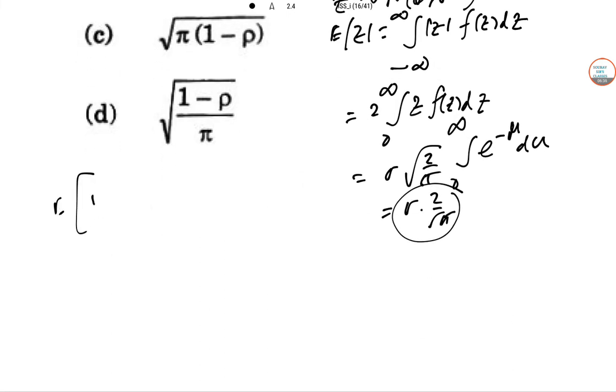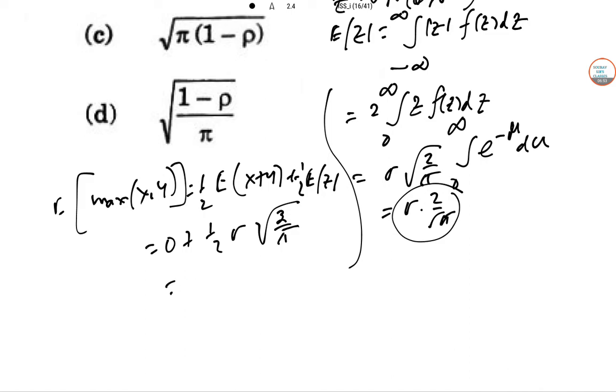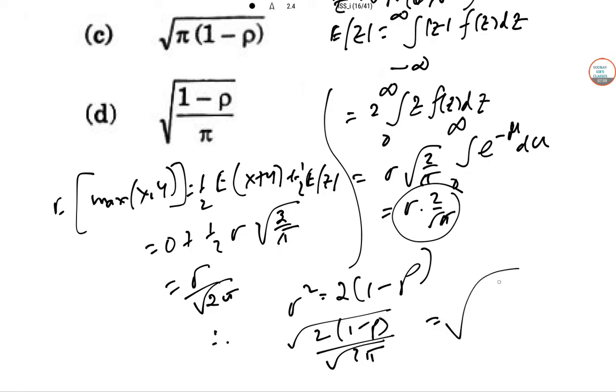Now, expectation of maximum of X, Y. This thing is half of expectation of X plus Y plus half of expectation of mod Z. So this is 0 plus half sigma root over 2 pi. So sigma root over 2 pi. Sigma square equal to 2 into 1 minus rho. So this expectation of max, this value will be 2, this and this divided by 2 pi. So this is 1 minus rho by pi. Hence, option number D is correct.